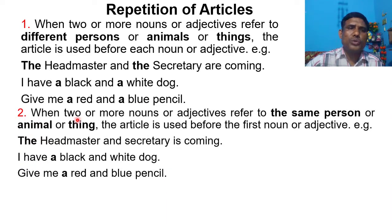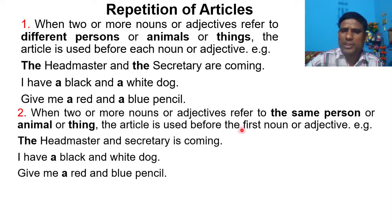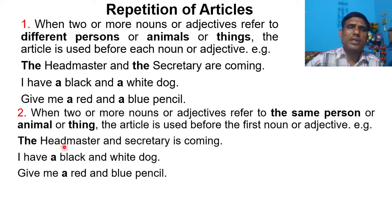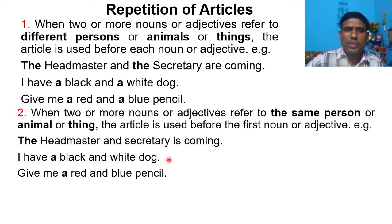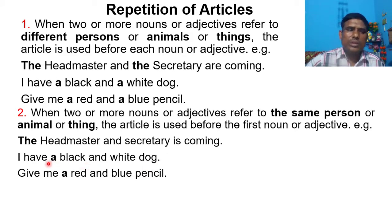Number two: When two or more nouns or adjectives refer to the same person, animal, or thing, the article is used before the first noun or adjective only. For example, 'The headmaster and secretary is coming' — headmaster and secretary refer to the same person, so THE is used before only the first noun. 'I have a black and white dog' means I have one dog that is partly black and partly white, so A is used before the first adjective only.